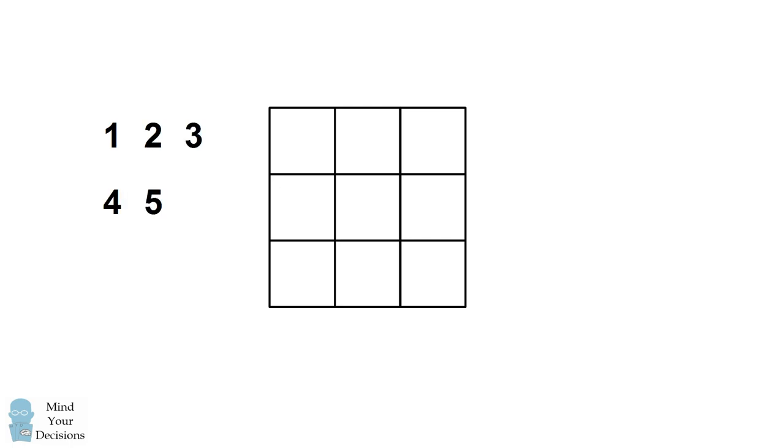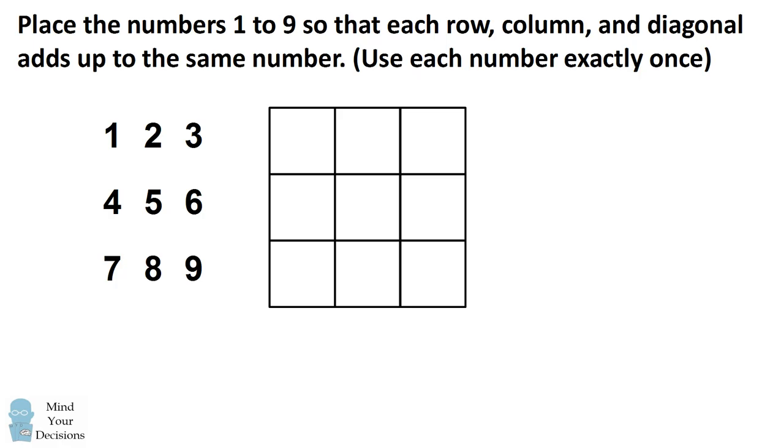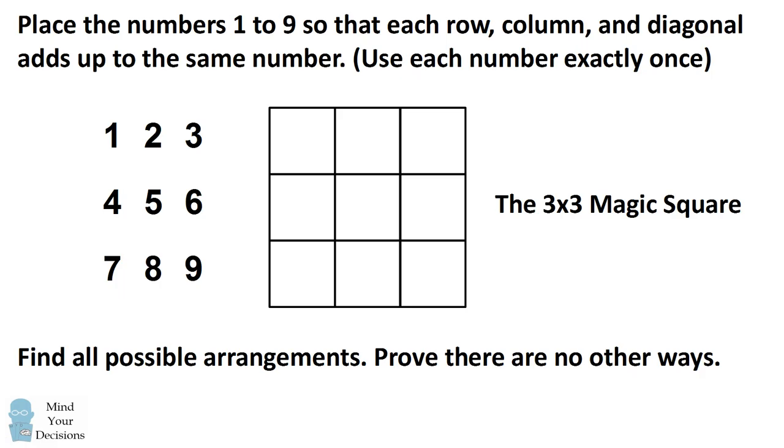Hi, this is Presh Talwalkar. Can you place the numbers 1 through 9 in the following 3x3 grid so that each row, column, and diagonal adds up to the same number? This is a condition for the 3x3 magic square. I want you to find all possible arrangements, and I want you to prove there are no other ways to do it. Can you figure it out?